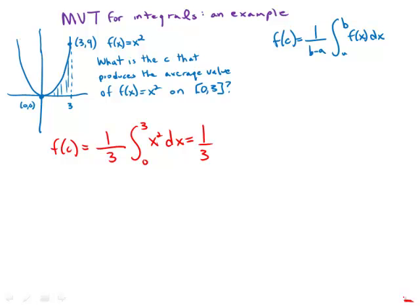Very simple integral. The antiderivative of course is x cubed over 3 and we evaluate at 3 and 0 and then when we plug in and evaluate we find that this average value is 3. In other words the average height of this function is a height of 3.